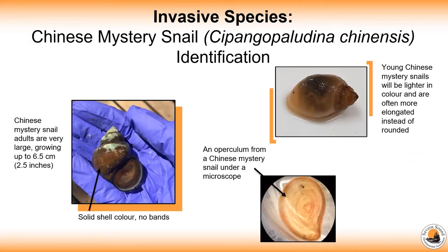Now for the Chinese Mystery Snail. The best identification feature for the Chinese Mystery Snail is its size. Adults can grow up to 6.5 cm long — that's larger than our native snails. Their shells are usually brownish to olive green and solid in color with 7 to 8 whorls. They'll also have an operculum just like the Banded Mystery Snail, a feature not present on our native snails.